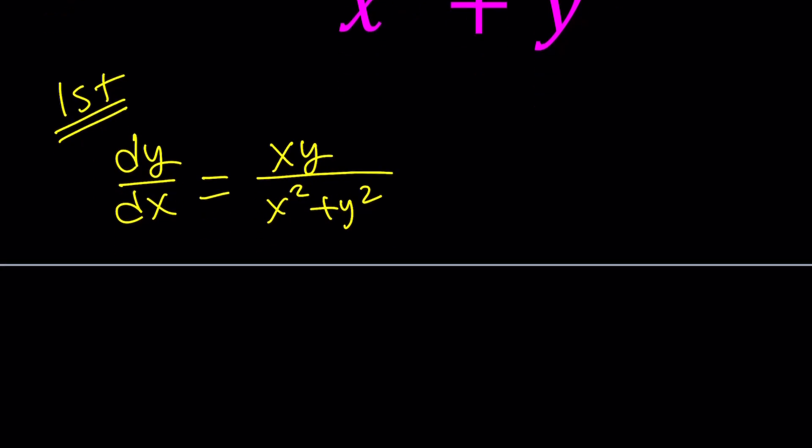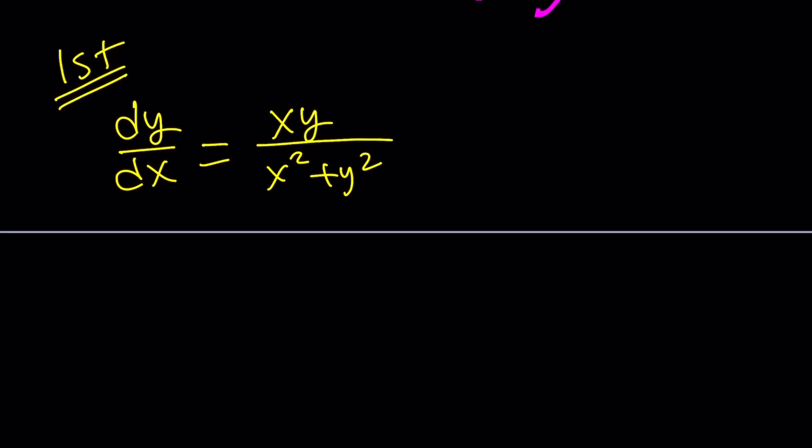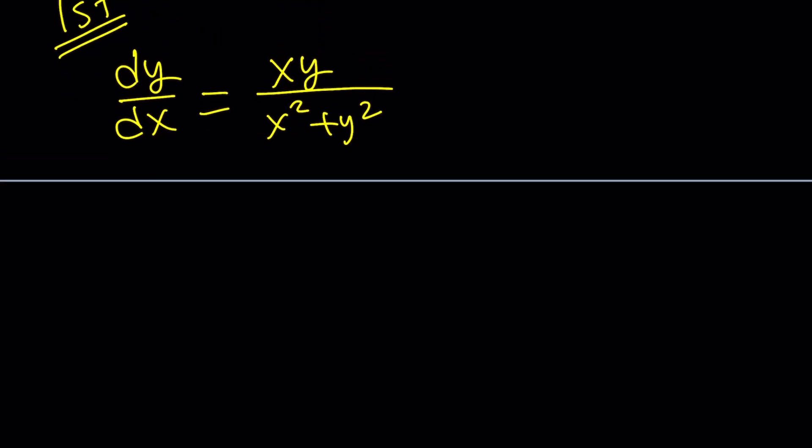But one thing that will help us is to flip both sides. Now, is dy/dx a fraction? It is. Maybe it's not. But it acts like a fraction. So we can go ahead and flip both sides. dx/dy is just going to be (x² + y²)/xy. And then we can split it up.